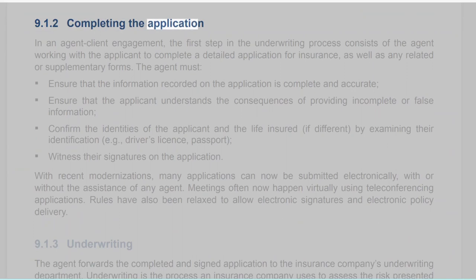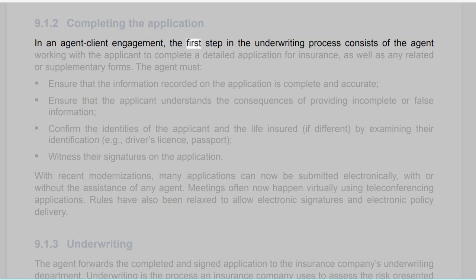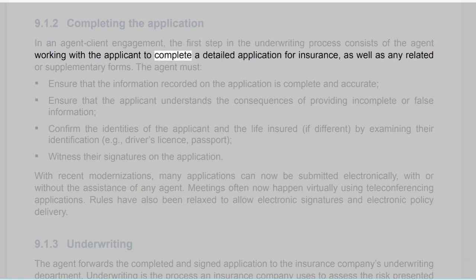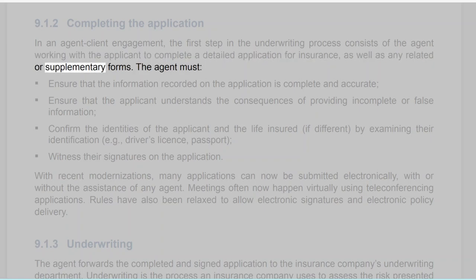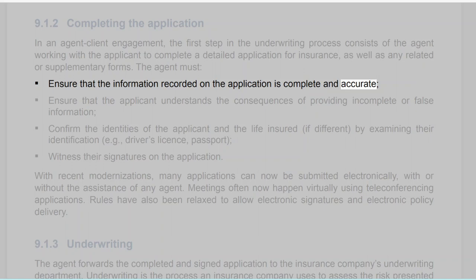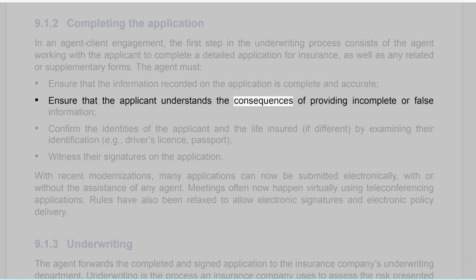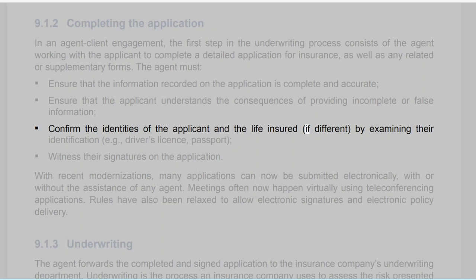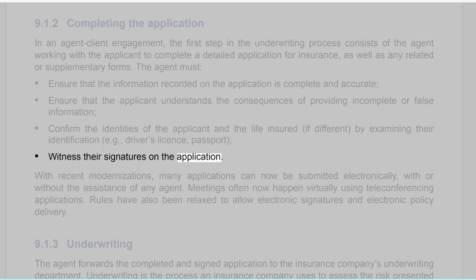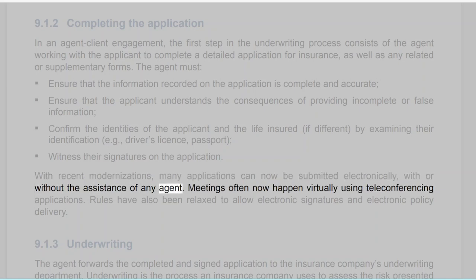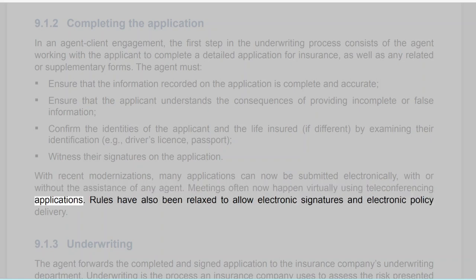Section 9.1.2: Completing the Application. In an agent-client engagement, the first step in the underwriting process consists of the agent working with the applicant to complete a detailed application for insurance, as well as any related or supplementary forms. The agent must ensure that the information recorded is complete and accurate, ensure the applicant understands the consequences of providing incomplete or false information, confirm the identities of the applicant and the life insured by examining identification (e.g., driver's license, passport), and witness their signatures. With recent modernizations, many applications can now be submitted electronically, with or without the assistance of an agent. Meetings often happen virtually using teleconferencing applications, and rules have been relaxed to allow electronic signatures and electronic policy delivery.